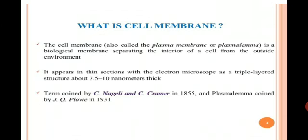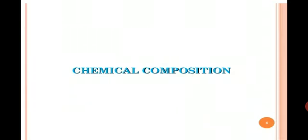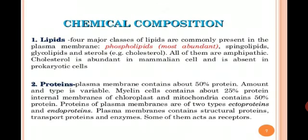The cell membrane, also called the plasma membrane or plasmalemma, is a biological membrane separating the interior of the cell from the outside environment. It appears in thin section with the electron microscope as a triple-layered structure about 7.5 to 10 nanometers thick. The cell membrane is flexible and allows a unicellular organism to move. For example, in the figure you are watching the unicellular amoeba, in which the cell membrane projections are responsible for the movement of the amoeba.